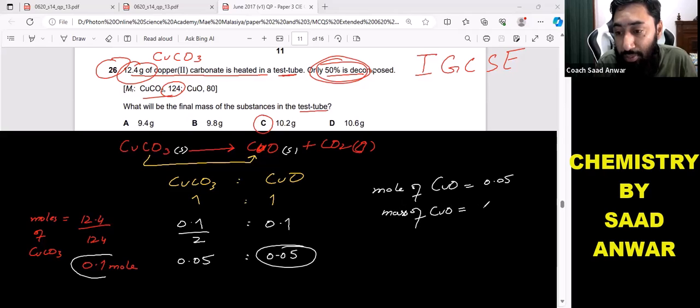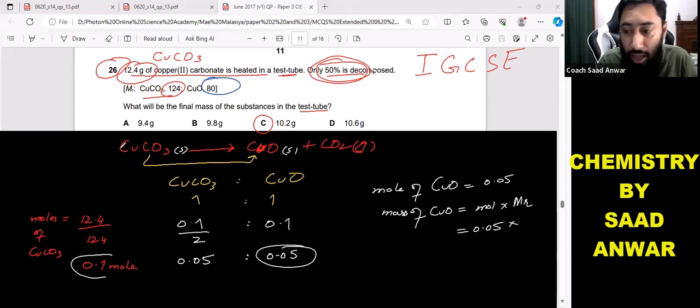So mass of copper oxide is moles times molar mass. So moles is 0.05, molar mass of copper oxide given in the question is 80. So when I multiply this with 80, I will be getting 4 grams.